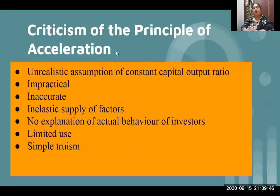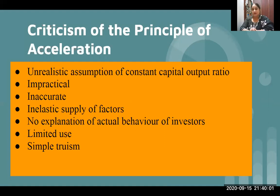Now we come to the point of criticism. As I mentioned earlier, every theory's criticism is based on its assumptions. First point: unrealistic assumption of constant capital-output ratio. Is it possible that the capital-output ratio remains the same? In any economy, can the capital-output ratio always be constant? No, it can't be. With technical progress, our capital-output ratio will automatically change. It is impractical — in reality it is not possible.